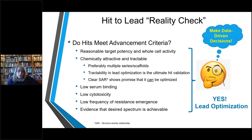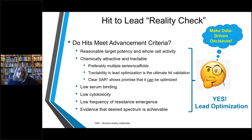At this point, you need to continually make data-driven decisions. Do your hits meet your advancement criteria? Are they attractive and tractable? Preferably you will have more than one scaffold to work on. Tractability in lead optimization — meaning that changing an analog will change the phenotypes you're characterizing — is really the ultimate hit validation. If there's a clear structure-activity relationship in your analogs, that holds promise that it can be optimized. Ideally your compounds should have low serum binding, low cytotoxicity, low frequency of resistance, and some evidence that your desired spectrum is achievable.